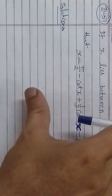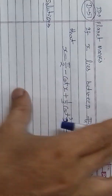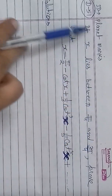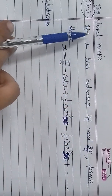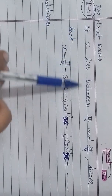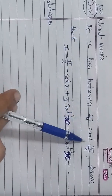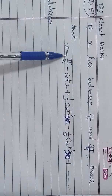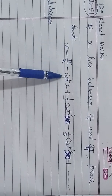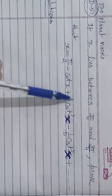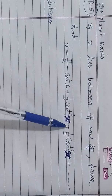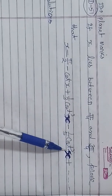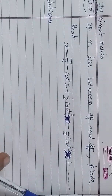Bismillahirrahmanirrahim. On the demand from ID planet Mars, a problem from trigonometry Gregory series chapter. If x lies between π/4 and 3π/4, prove that x is equal to π/2 minus cot x plus 1/3 cot³x minus 1/5 cot⁵x plus and so on to infinity.